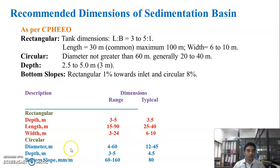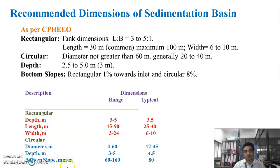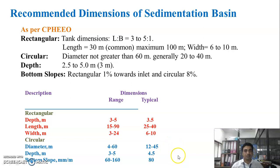For circular type sedimentation tank, the diameter range is 4 to 60 meters, typically taken as 12 to 45 meters. The depth is 3 to 5 meters, generally taken as 4.5 meters. The bottom slope is 60 to 160 mm per meter, typically taken as 80 mm per meter. These are the recommended dimensions of sedimentation basin as per CPHEEO.